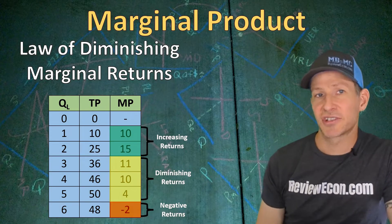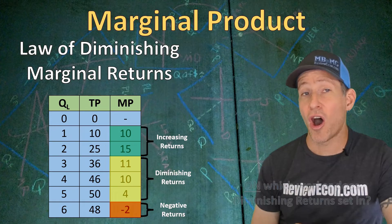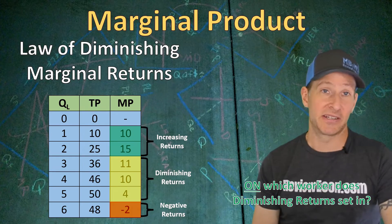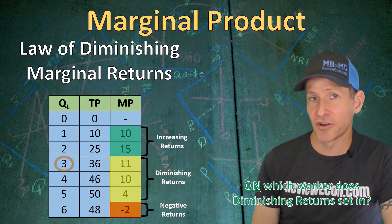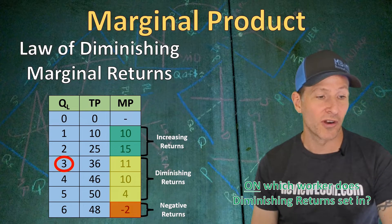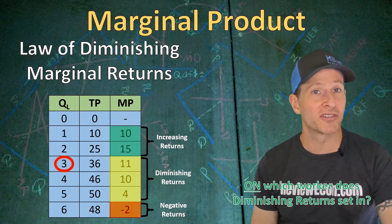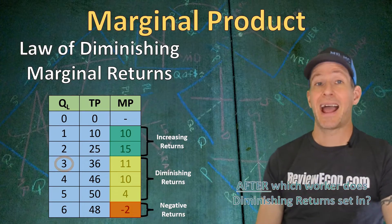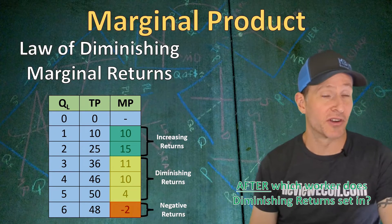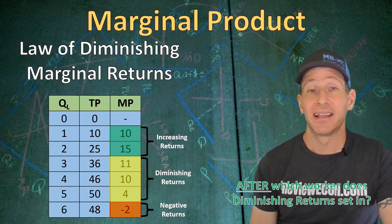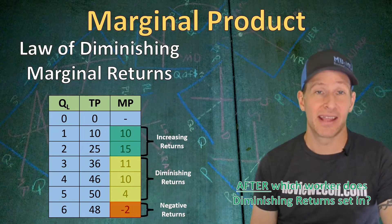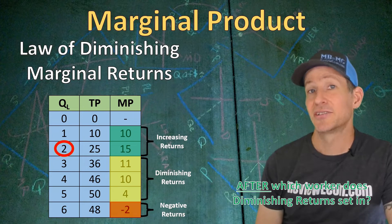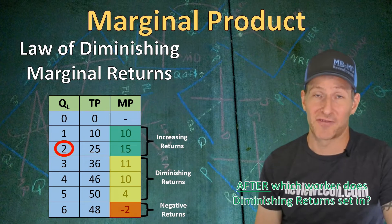On your exam, you could see questions like: on which worker does diminishing returns set in? The answer here would be the third worker, because it's on that third worker that we first see a decrease in marginal product. You could also be asked: after which worker does diminishing returns set in? The answer would be the second worker. Make sure you read these questions carefully to ensure you identify the correct number.